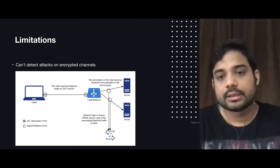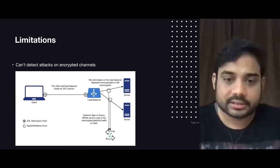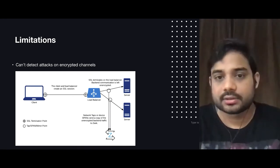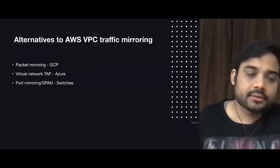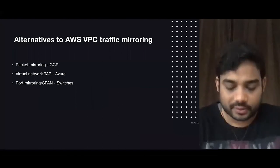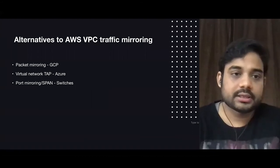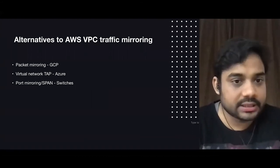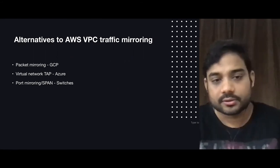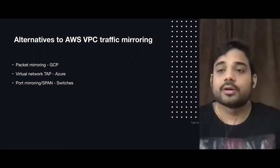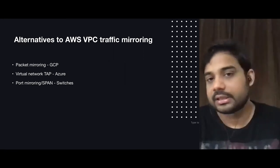Even if your internal traffic is encrypted, it will be difficult to detect attacks, but it can give you key insights on what IP is trying to do what. There are alternatives to VPC traffic mirroring if you are not on AWS — on GCP you can use packet mirroring, on Azure you can use virtual network TAP, and if you are on a custom data center you can always use port mirroring and SPAN to achieve the same results.